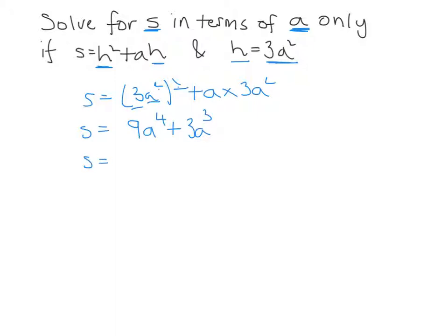Now I can factorize this a little bit. I can take a 3 out of this, and a 3 out of this, and an A cubed out of that, and an A cubed out of that. So S equals 3A cubed times 3A plus 1 in brackets.